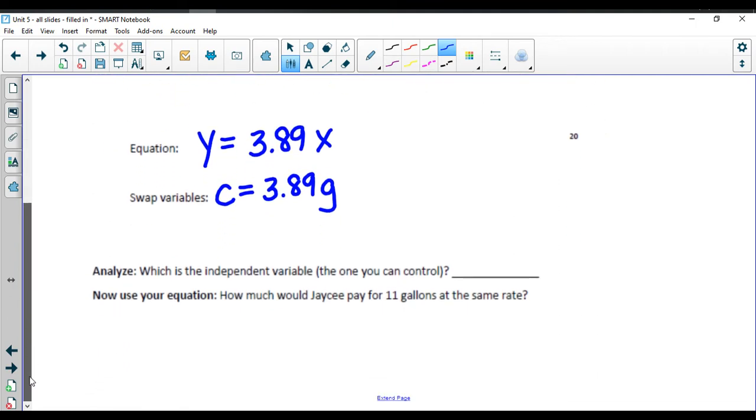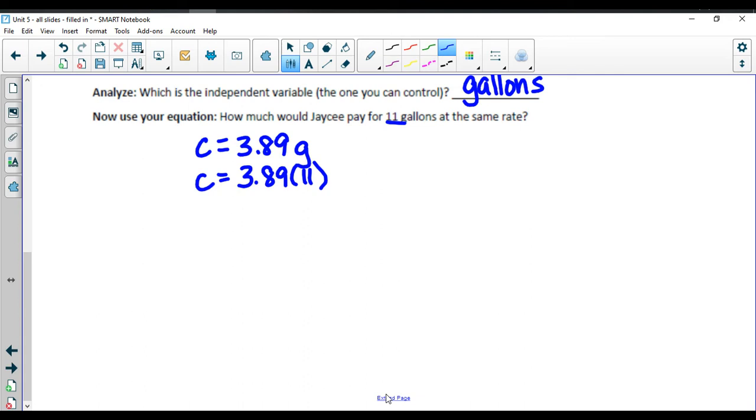So which one is independent? The one that you can control. We can determine how many gallons we fill, and the money depends on how many gallons we purchase. So now we're going to use the equation. Cost equals 3.89G. How much would JC pay for 11 gallons at the same rate? Cost is equal to 3.89 times 11. Your cost is going to be equal to $42.79.